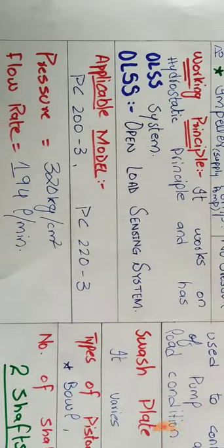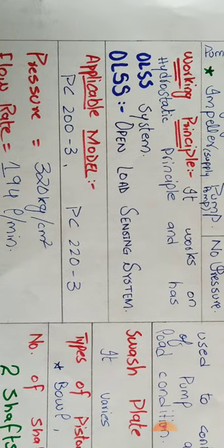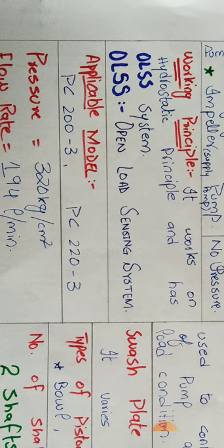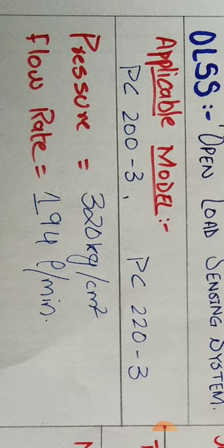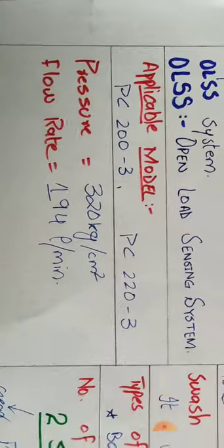Let's come to the working principle. It works on the hydrostatic principle and has OLSS system. OLSS stands for Open Load Sensing System. Applicable models are PC200-3 and PC220-3. Its pressure is 30 kg per cm² and its flow rate is 194 liters per minute.